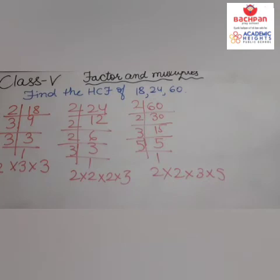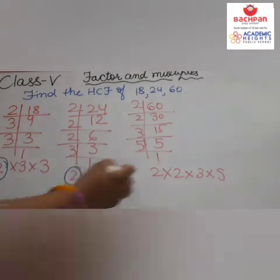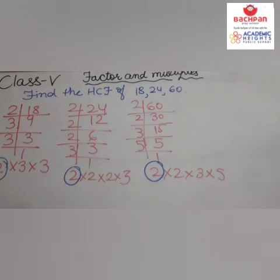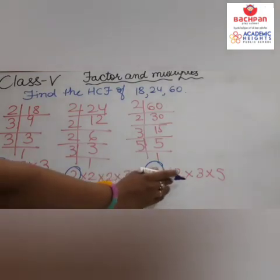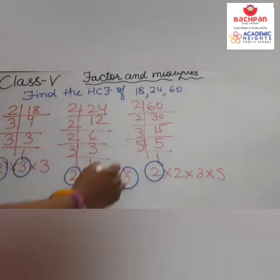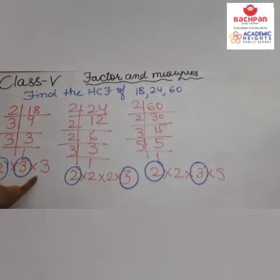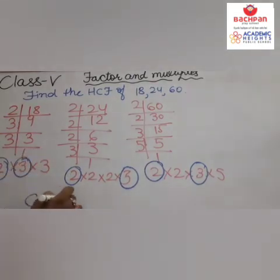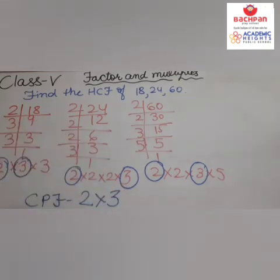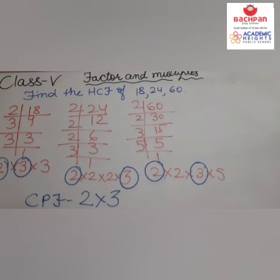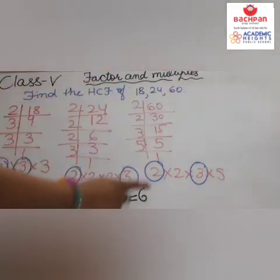Now identify the common prime factors. Looking at all three: 2 is common, and 3 is also common. So the common prime factors are 2 and 3. HCF equals product of common prime factors: 2 times 3 equals 6. Thus, the HCF of 18, 24, and 60 is equal to 6.